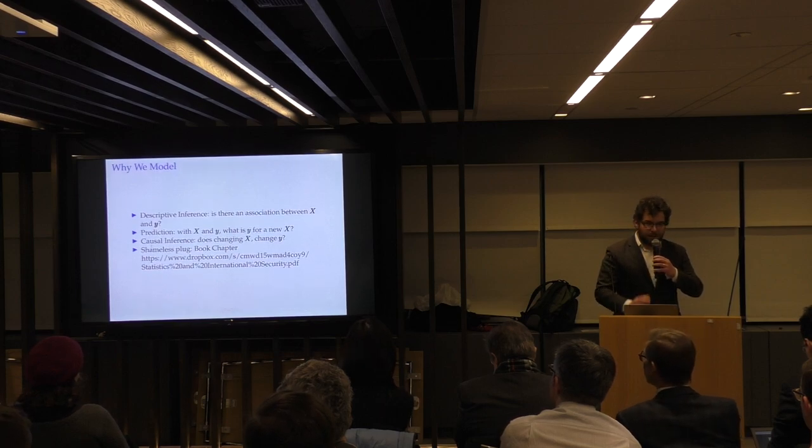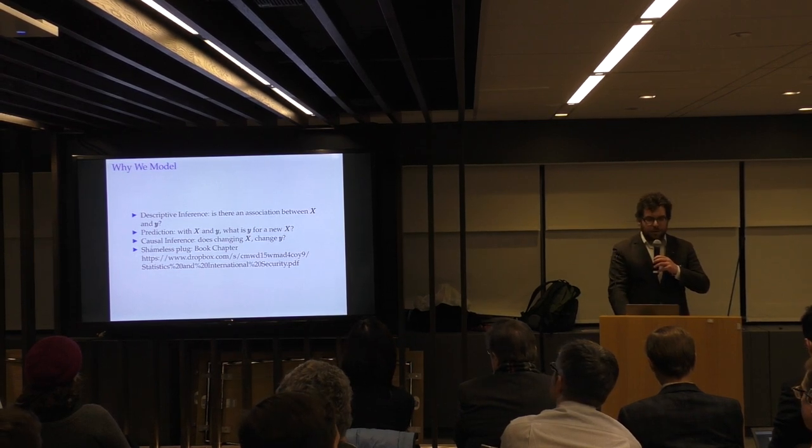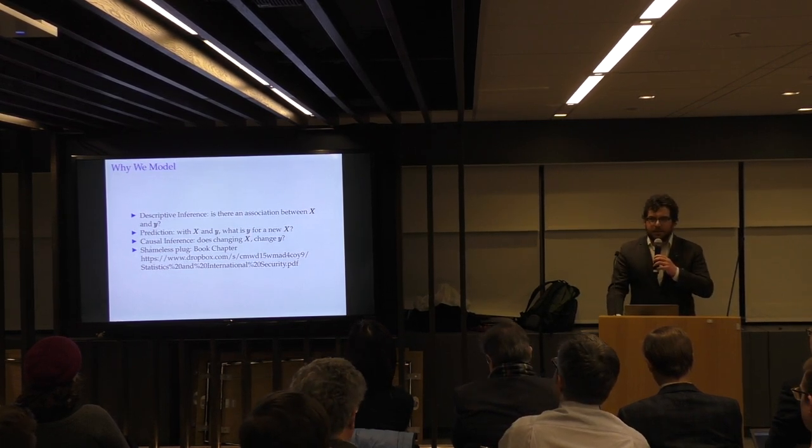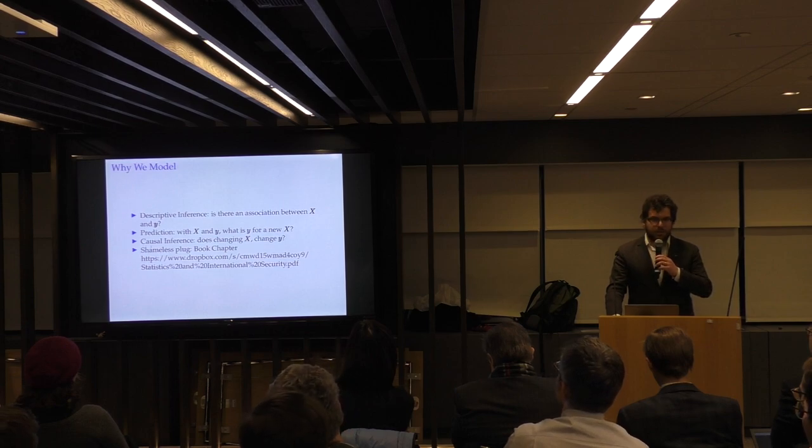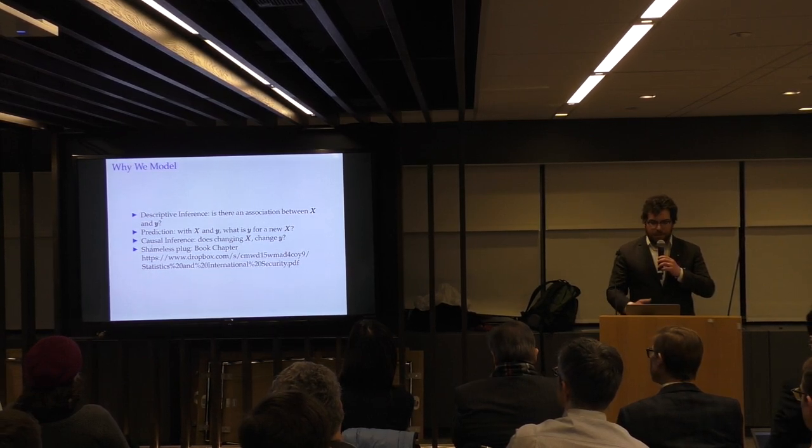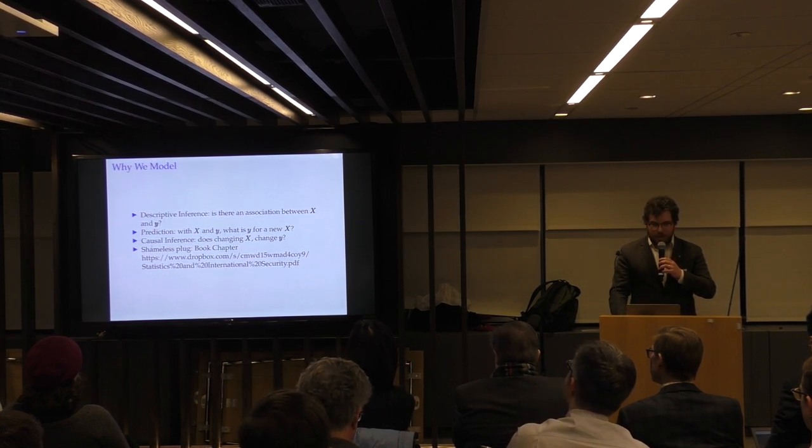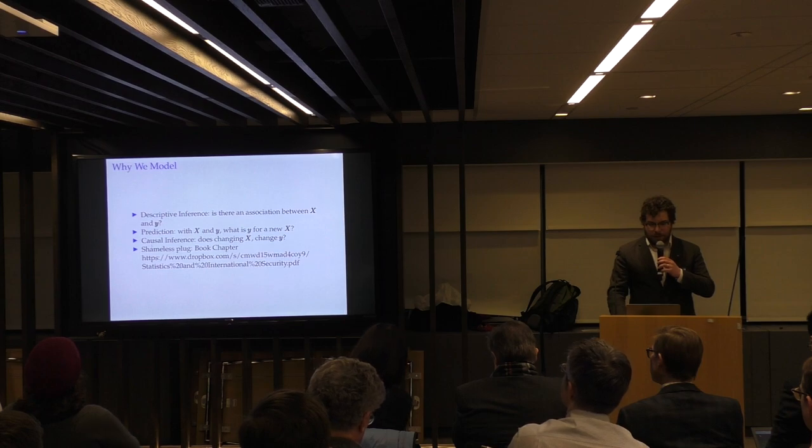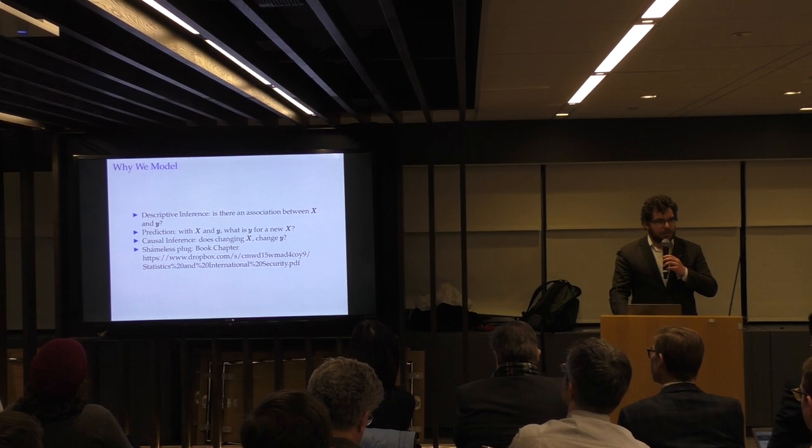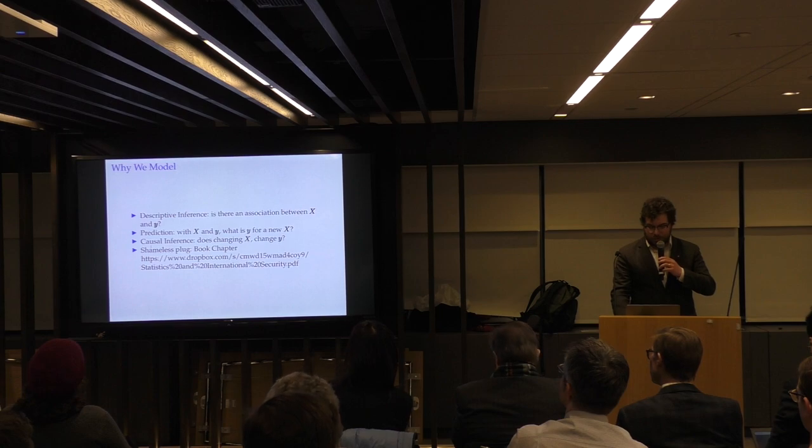So I wanted to start off thinking about why we model. So I think of there as basically being like three reasons you might model data. Descriptive inference, you want to know, is there an association between X and Y? Prediction, you have some covariates and an outcome, and you want to know what is your outcome for a new set of covariates. And causal inference, where you want to know, does changing X change Y? And I've got a book chapter where I talk about this in a little more detail, and I think sort of thinking about why you model can help inform the sorts of models you choose to use.